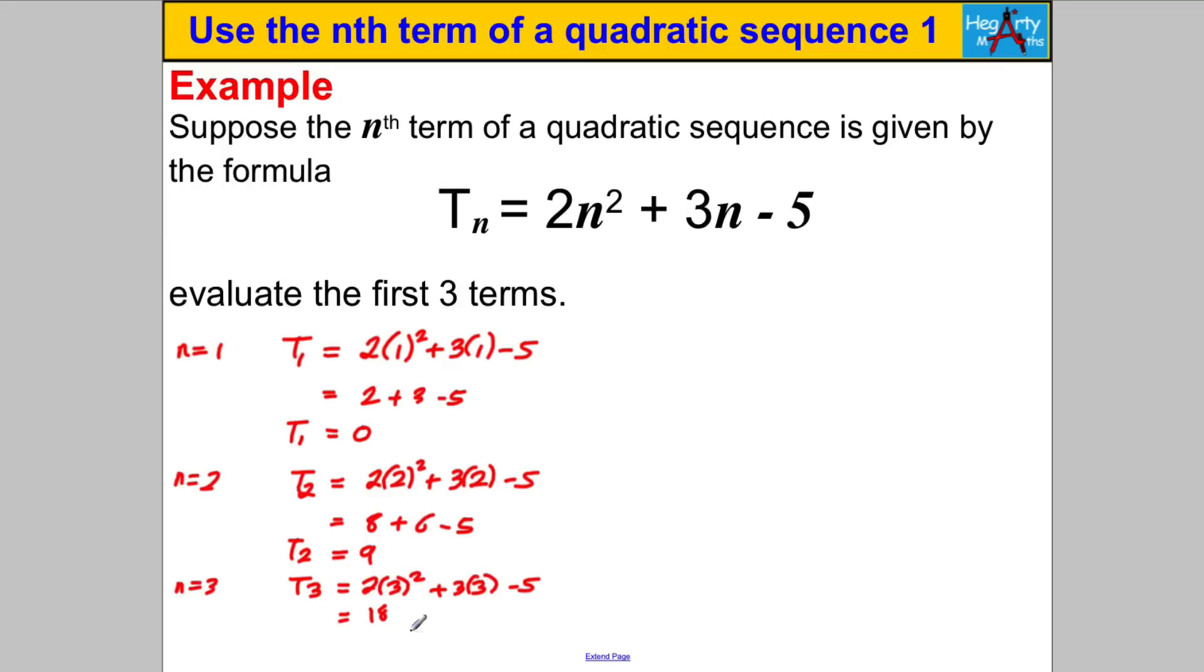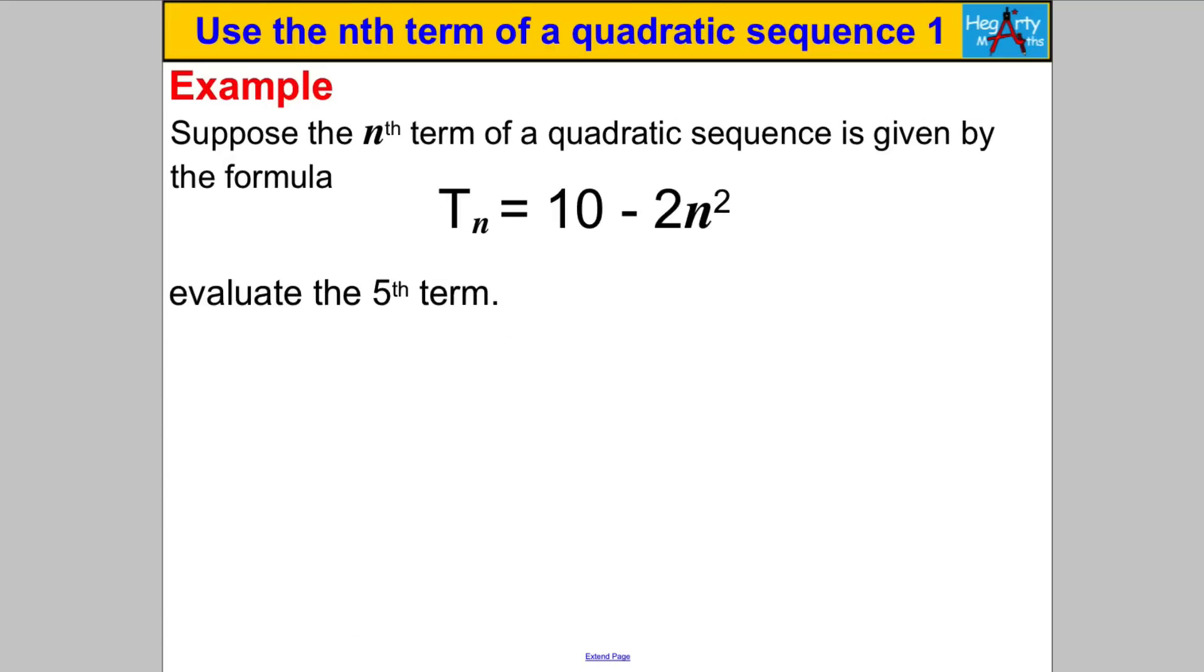3 squared is 9, 2 times 9 is 18, 3 times 3 is 9 so 18 add 9 take away 5, 18 add 9 is 27 take away 5 we get ourselves 22 and T_3 is equal to 22. Here's our first term our second term our third term as requested and we're done. Let's have a go another one, pause the video. This time we're asked to evaluate just the fifth term.